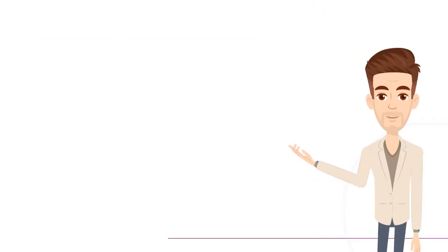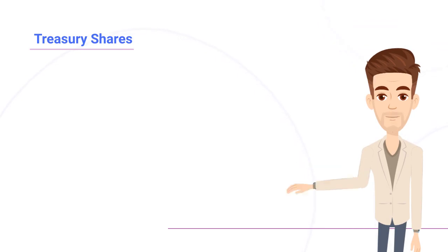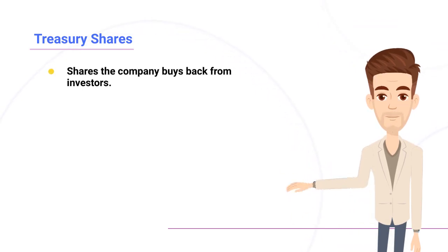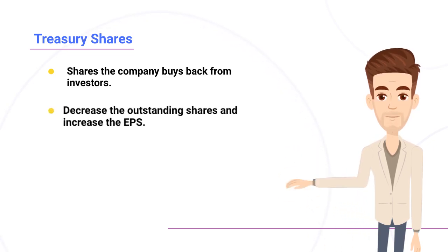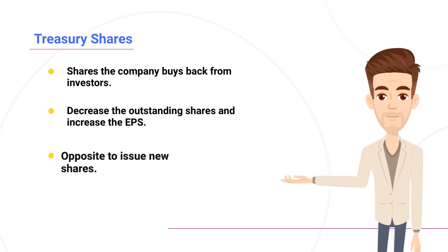Before we finish this video, let us talk about treasury stocks. They are the stocks that a publicly traded company buys back from investors. Buying back the shares will decrease the outstanding shares and increase the earnings per share. So you can think about it as the complete opposite of issuing new shares.